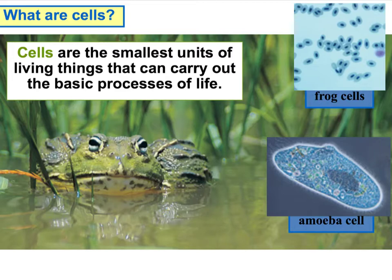Where do cells come from? Cells come from other cells. They grow and split off of each other and continue to grow that way. Every cell and every living thing originally came from another cell. It divided or split into two new cells, and so did the cell before that, and so on.